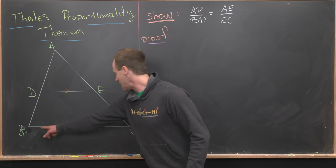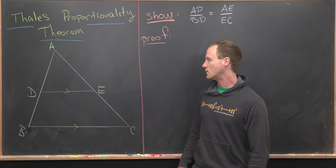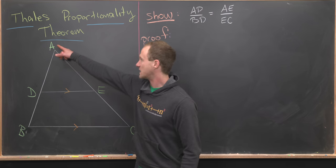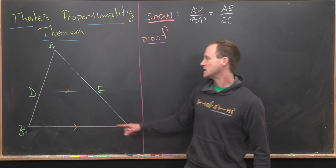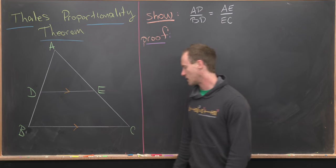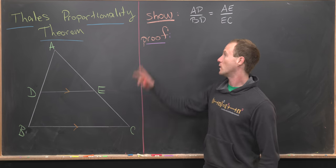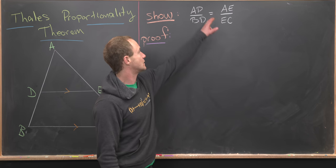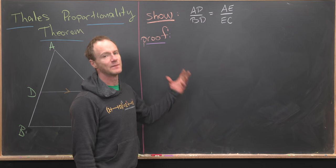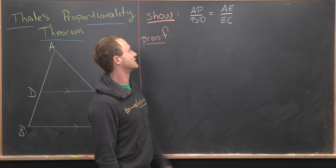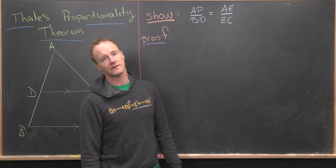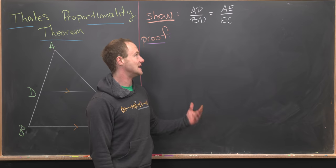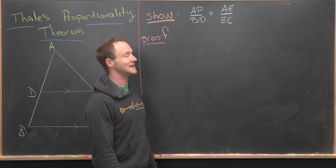We've got a triangle ABC and then we have situated D and E along line segments AB and AC so that DE is parallel to BC. What this theorem says is that AD over BD equals AE over EC. What I mean by that is the length of line segment AD over the length of line segment BD equals the length of line segment AE over the length of line segment EC.